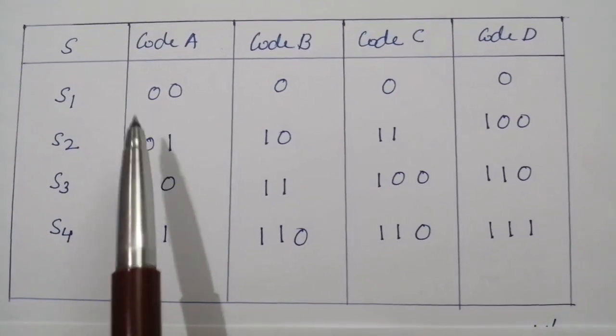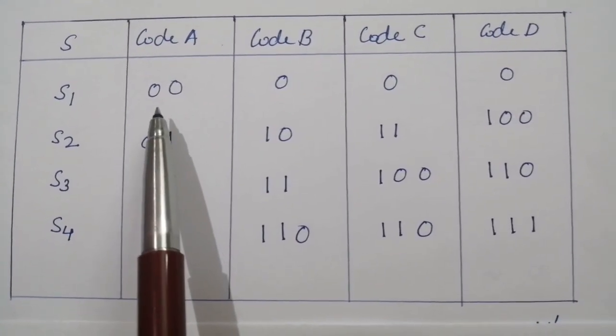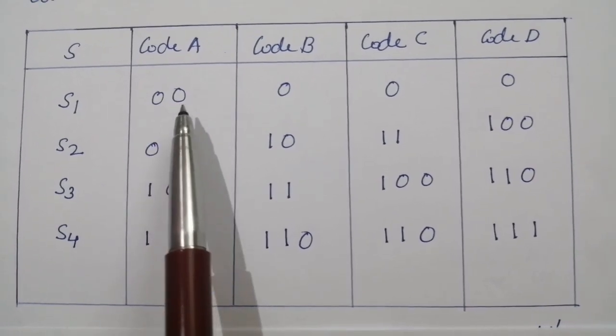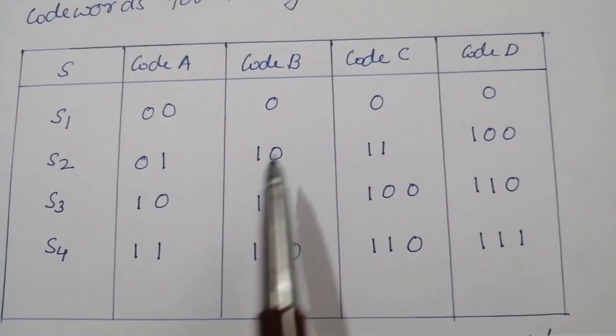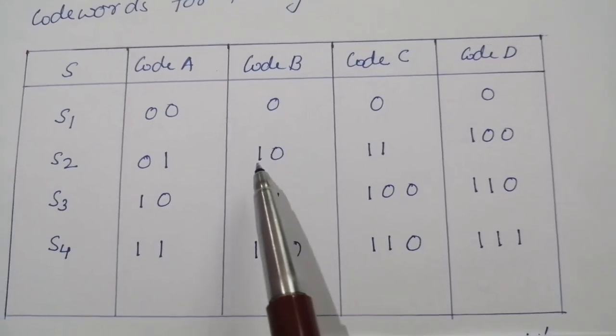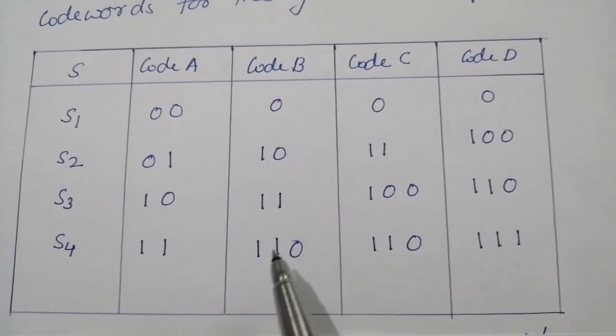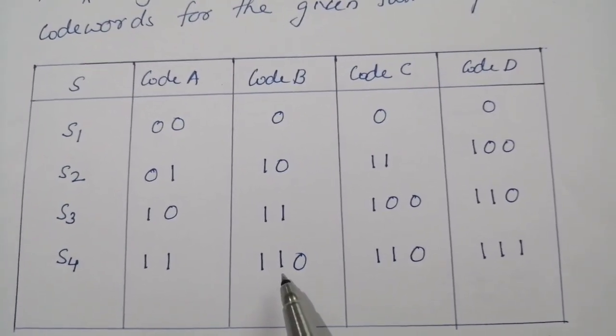We can see that coding scheme A is a fixed length codeword in which each codeword has length 2, while in code B, first codeword has length 1, second has 2, third has 2, and fourth has codeword length of 3.